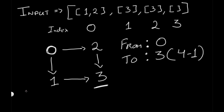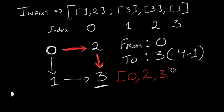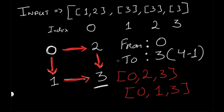Starting at node 0, we can either go to node 1 or node 2. If we go to 2 first, from 2 there's only one way to reach 3, so our first path is 0 → 2 → 3. For the second path, instead of going to 2, we go to 1. From 0 we go to 1, then from 1 we go to 3. So our second solution is 0, 1, 3. These two paths are our output.